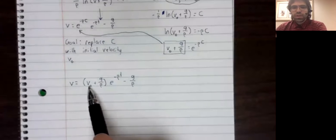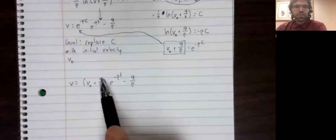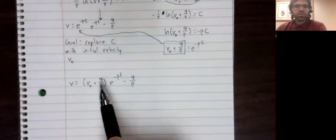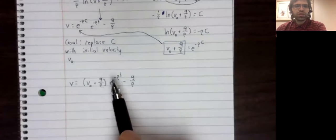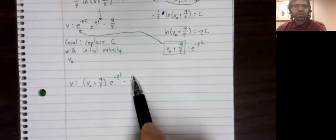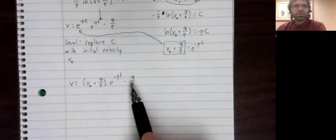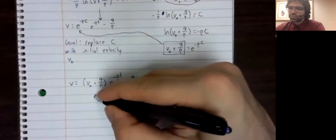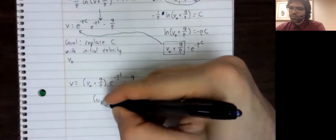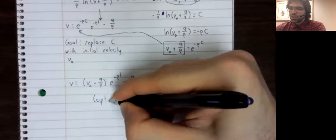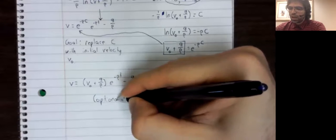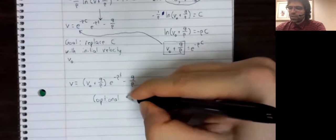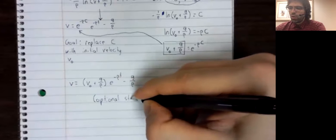Here's initial velocity, gravitational constant, drag coefficient, drag coefficient, gravitational constant, drag coefficient.